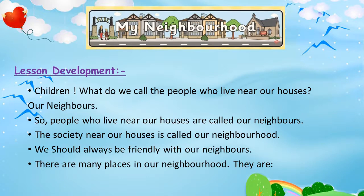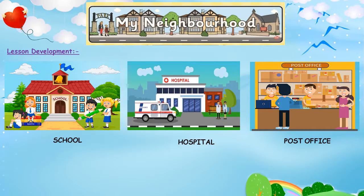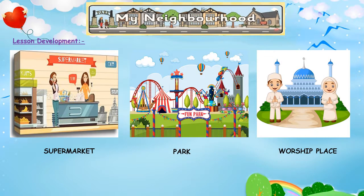There are some places in our neighborhood. You can see places like our school, hospital, post office, supermarket, park, worship places where we go to pray — church, temple, mosque, and Gurudwara.